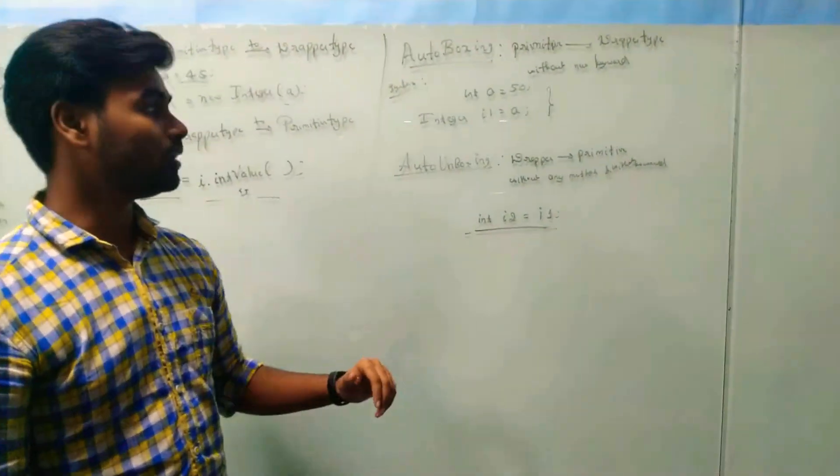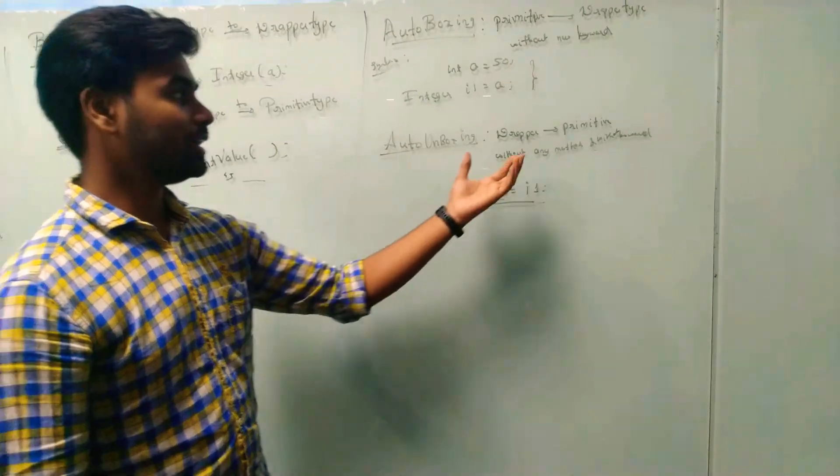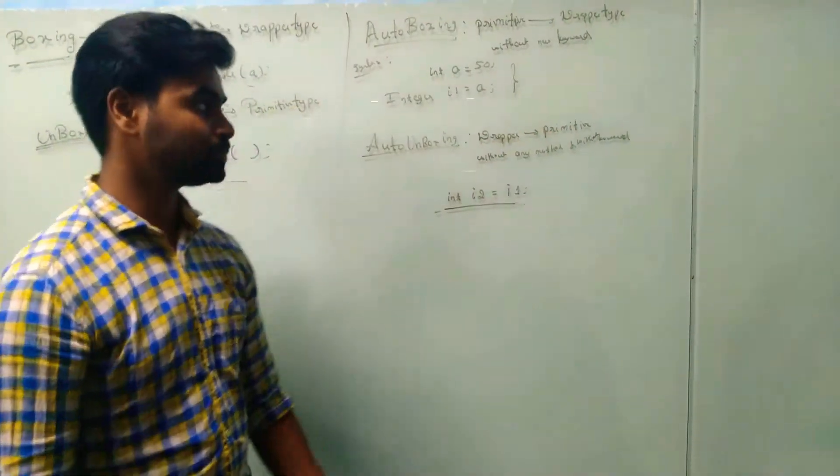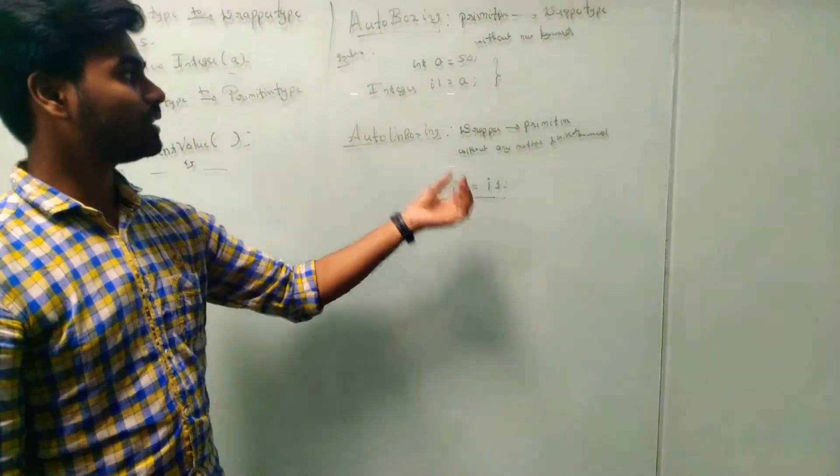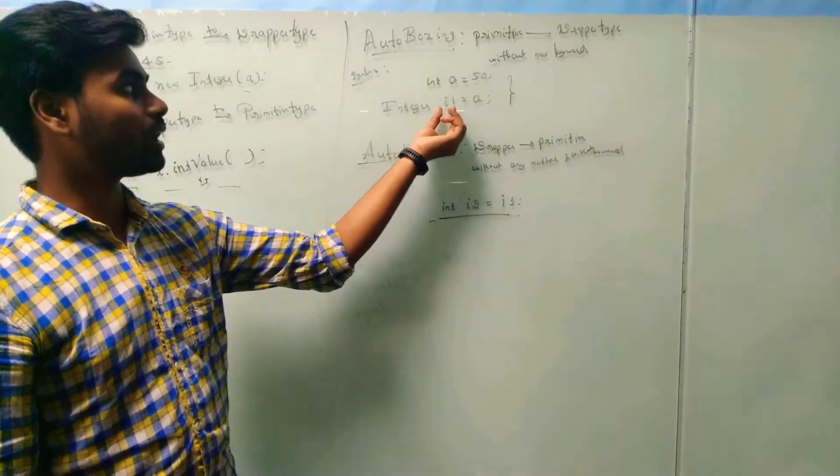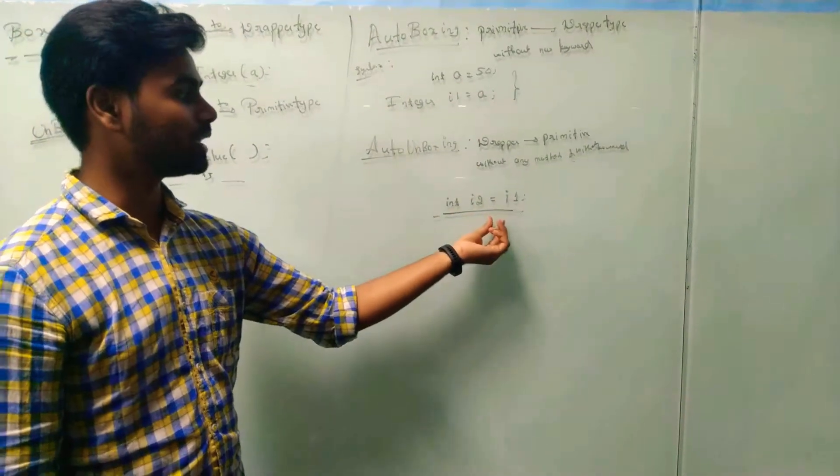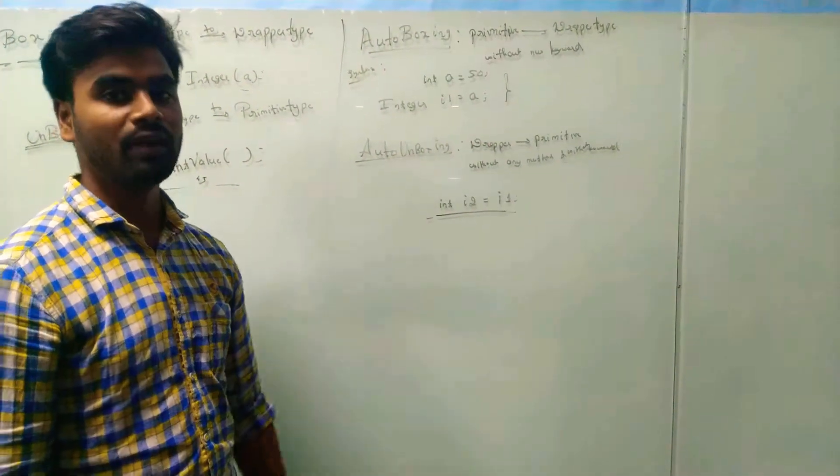It is the reverse process of boxing. Here, wrapper type to primitive type. Without any keyword, here, utilizing the value method. Here, the auto-boxed value should be stored here. And it will print the value 50.